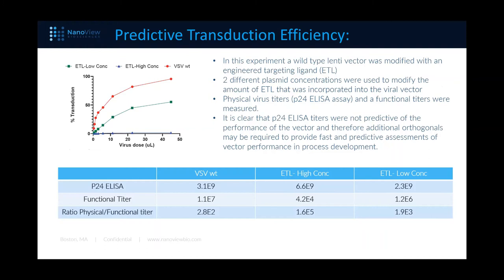In a predictive transduction efficiency experiment, a wild-type lenti vector was modified with an engineered targeting ligand — an additional protein to aid in how it interacts with cells. Two different plasmid concentrations were used to modify the amount of this additional protein incorporated into the vector. Physical virus titers and a functional titer were measured, and it's clear that p24 titers were not predictive of vector performance: p24 ELISA values were all within a couple-fold of each other, while functional titers spread over about three orders of magnitude.